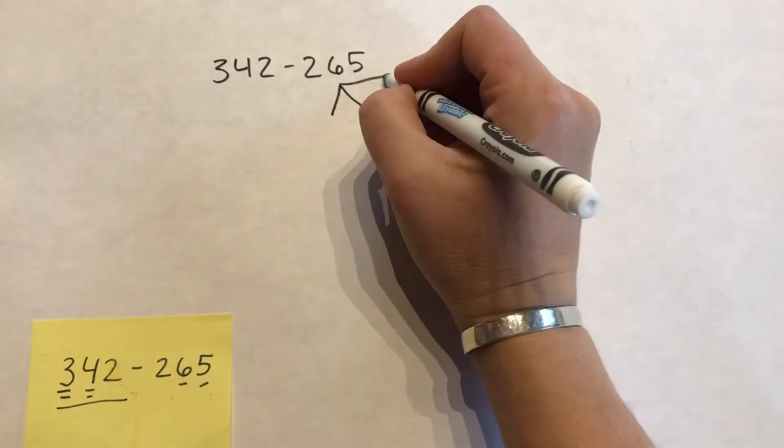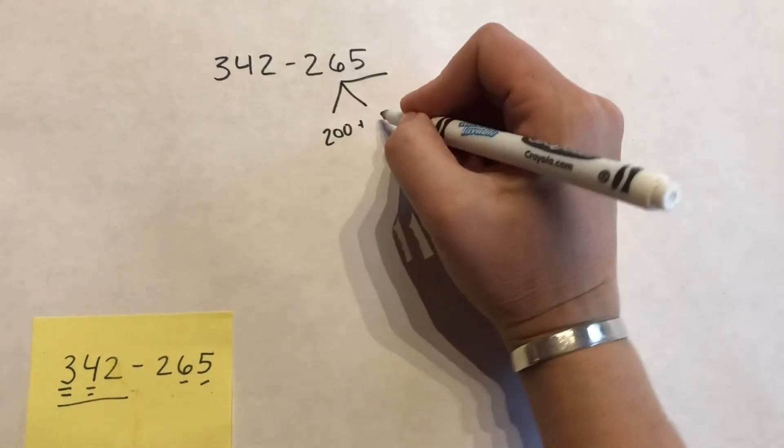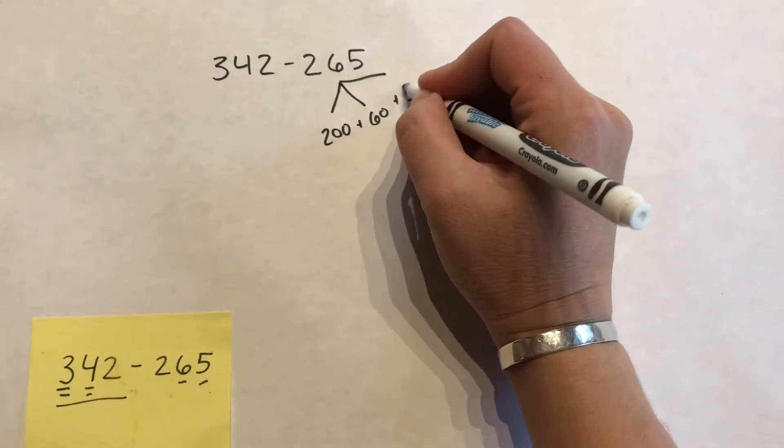You break apart the number that you're taking away into its place value, its hundreds, tens, and ones.